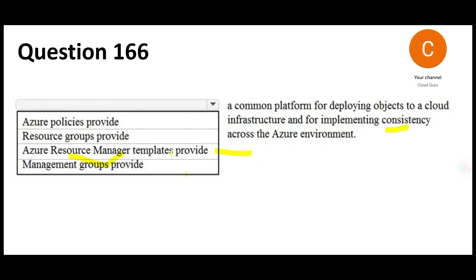First, you create an ARM template. Suppose you want two VMs, one SQL Server, and one Synapse database instance — you add them to the template, then deploy it to a development box with whatever configurations you need. All resource names and configurations will be stored in your template.